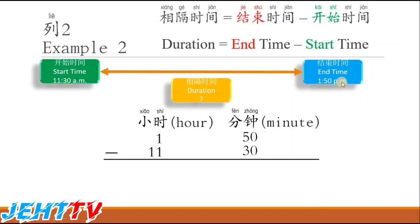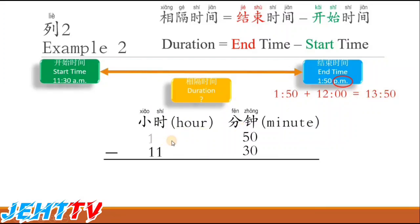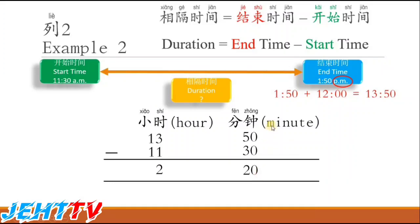As you can see, this is 1:50 p.m. If you remember from last time, for p.m. times we need to add 12 hours. So 1:50 p.m. becomes 1:50 plus 12 hours, which equals 13 hours 50 minutes. So the 1 hour becomes 13. Now we do the subtraction: 50 minus 30 equals 20, and 13 minus 11 equals 2. The answer for Example 2 is 2 hours and 20 minutes.